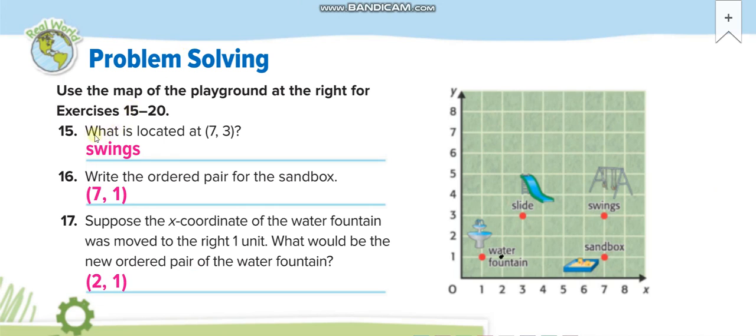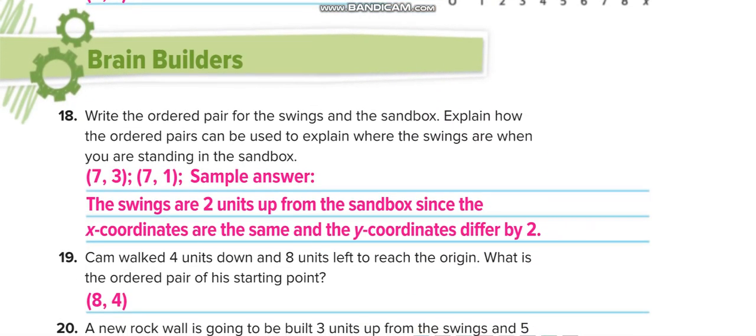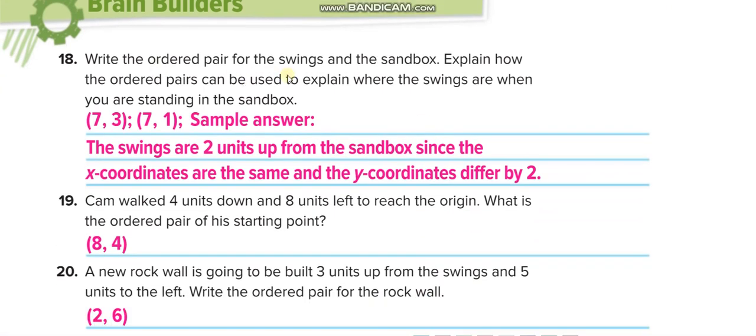What is located at (7, 3)? Swings. Write the ordered pair for the sandbox: (7, 1). Suppose the x-coordinate of the water fountain was moved to the right one unit. It would be (2, 1).